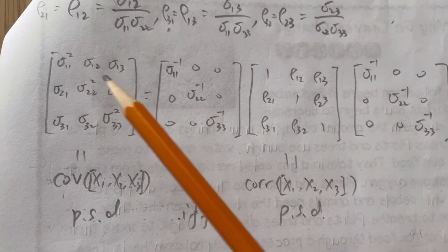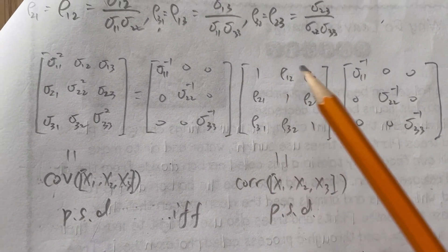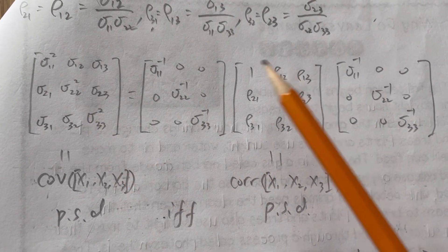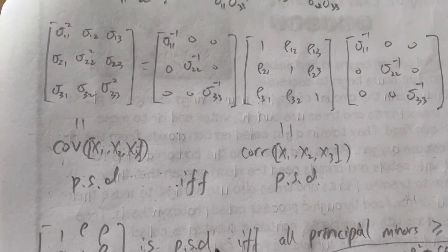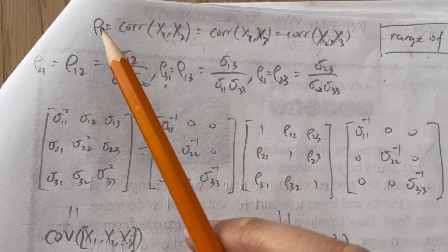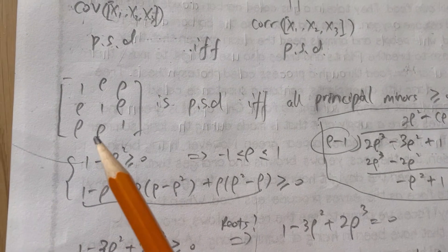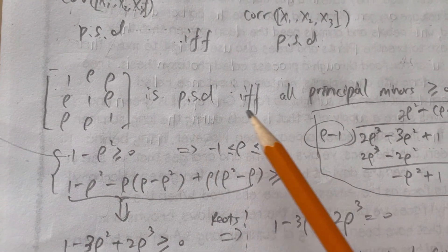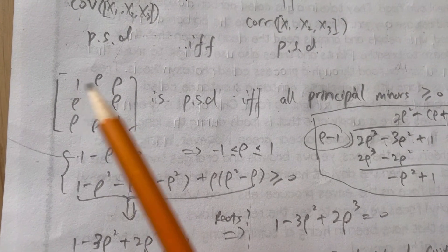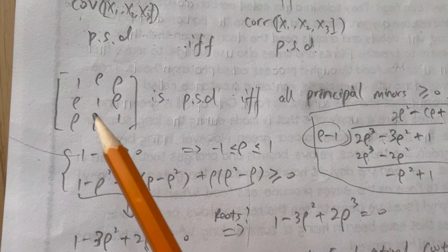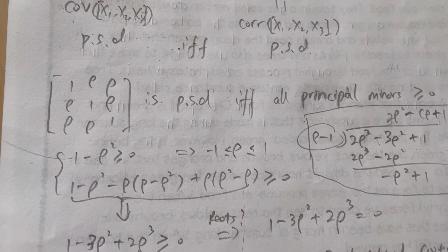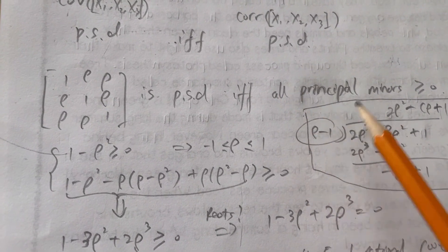For the covariance matrix to be positive semi-definite, it is equivalent to requiring the correlation matrix to be positive semi-definite, since the diagonal sigma matrices are themselves positive semi-definite. In our case, the off-diagonal entries rho_12, rho_13, and rho_23 are all equal to the same rho. One equivalent condition for positive semi-definiteness is that all principal minors are greater than or equal to zero — meaning if we delete any equal number of rows and columns along the diagonal, the determinant of the remaining sub-matrix must be non-negative.